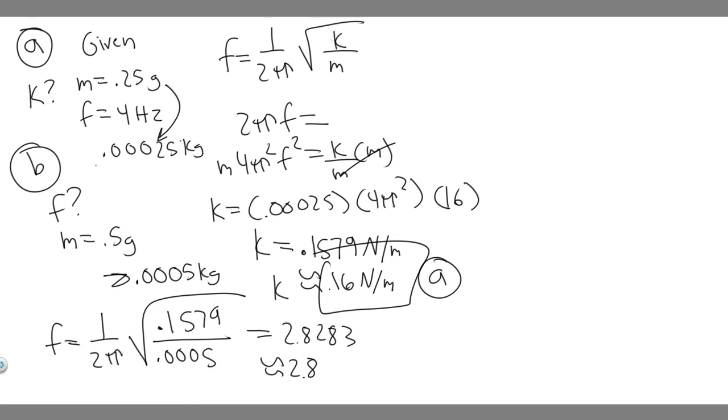We measure frequency in hertz. So 2.8 hertz, that's going to be the frequency we expect the web to oscillate if the mass is 0.5 now. So this is your answer to part B. This right here was your answer to part A. Hopefully you found this useful.